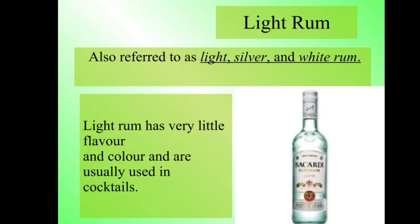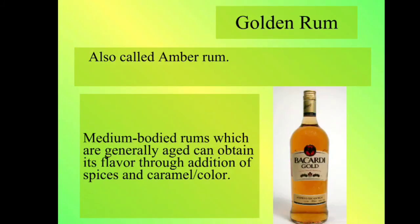Light rum, also referred to as light, silver, or white rum, has very little flavor and color and is usually used in cocktails. Second is golden rum, also called amber rum — these are medium-bodied rums which are generally aged and can obtain their flavor through the addition of spices, caramel, or color.